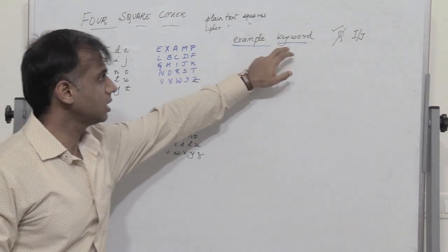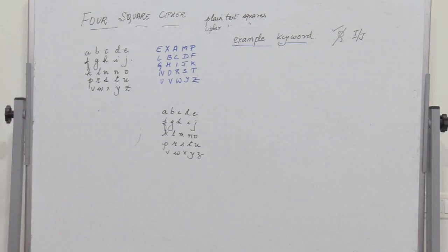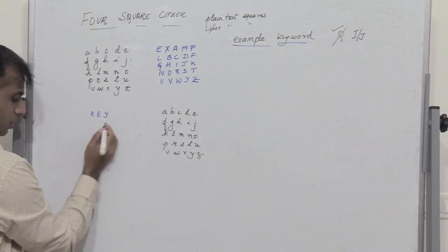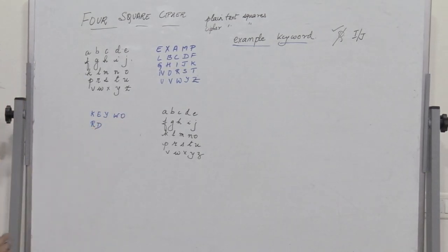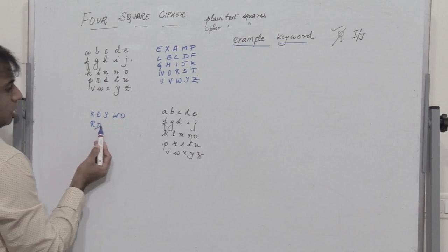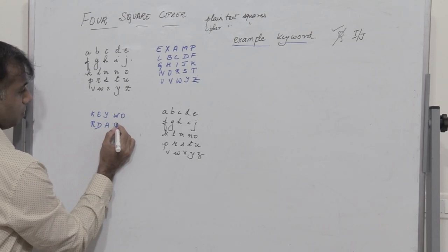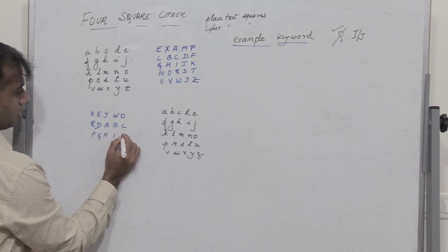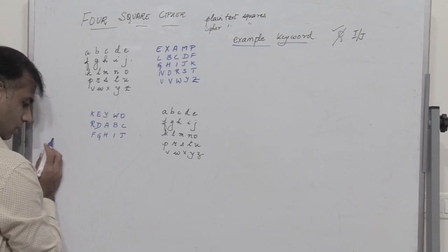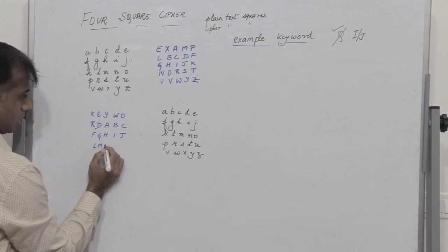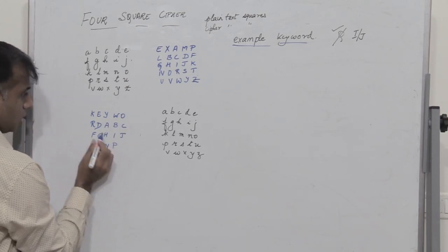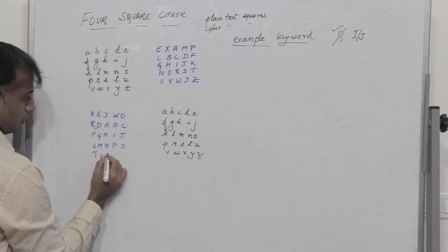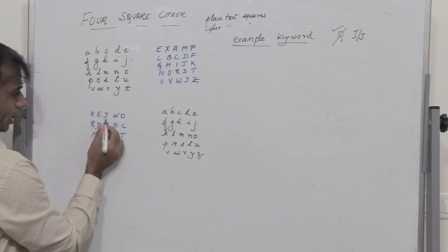Then I consider the second keyword, 'keyword' itself. I write the unique alphabets in uppercase: K, E, Y, W, O, R, D. None of the alphabets repeat. Then I write all remaining alphabets in order — A, B, C, F, G, H, I, J, L, M, N, P, S, T, U, V, X, Z — skipping Q and letters already used. This gives the second ciphertext square.